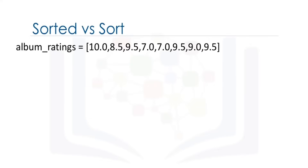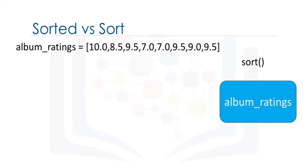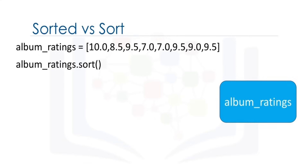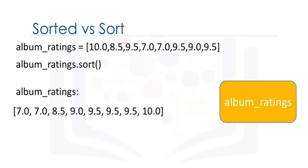If we use the method sort, the list album ratings will change and no new list will be created. The rectangle represents the list album ratings. When we apply the method sort to the list, the list album rating changes. Unlike the previous case, we see that the list album rating has changed. In this case, no new list is created.